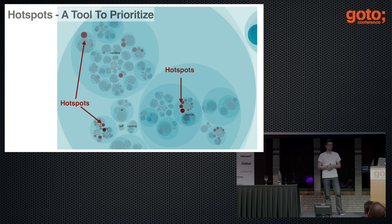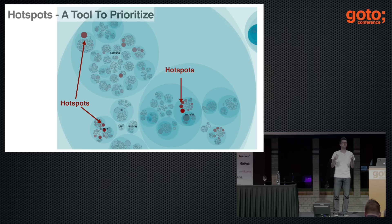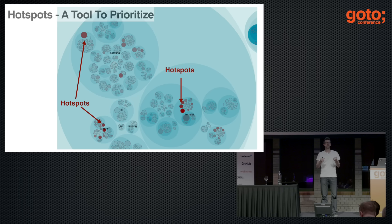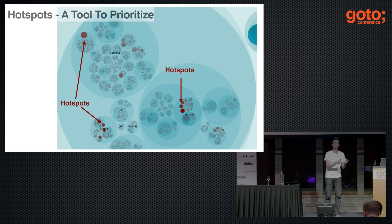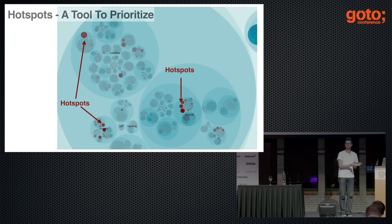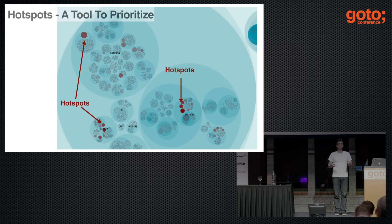Let's return to the visualization. This is data from a real system — the open source application Tomcat, written in Java. You can identify a number of hotspots here — complicated code we have to work with often. Typically, hotspots make great targets for refactorings. You can also do an extra code inspection, or direct extra testing efforts to those hotspot areas.